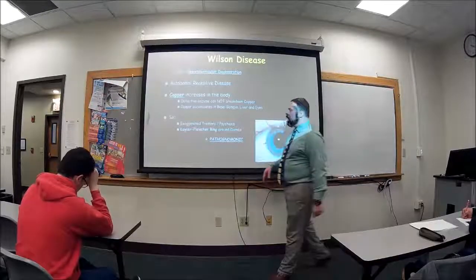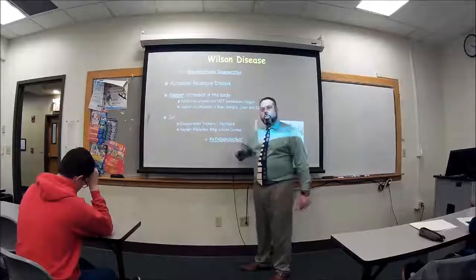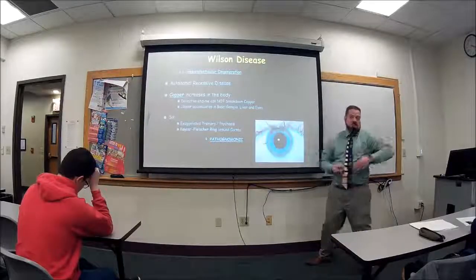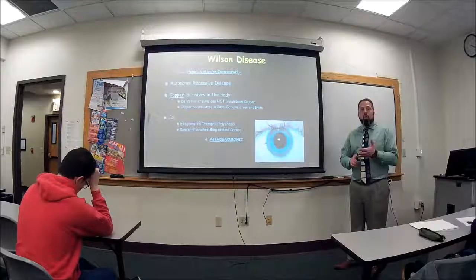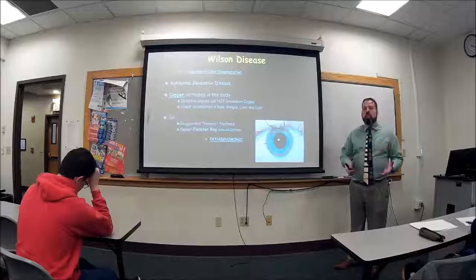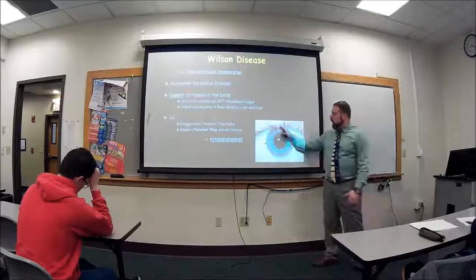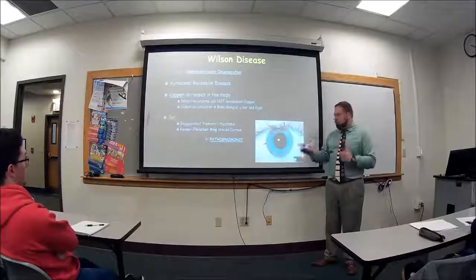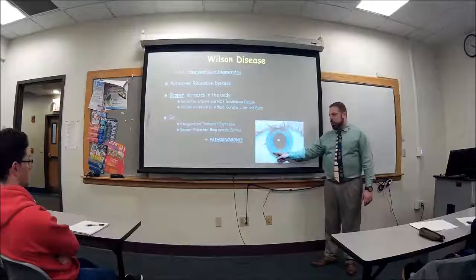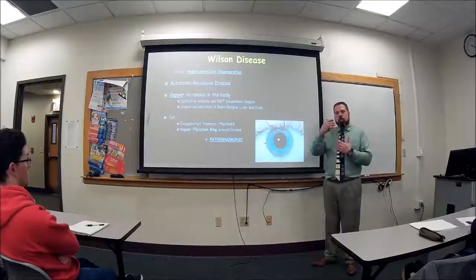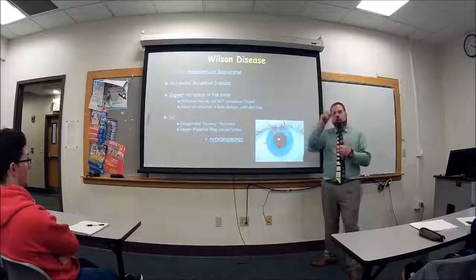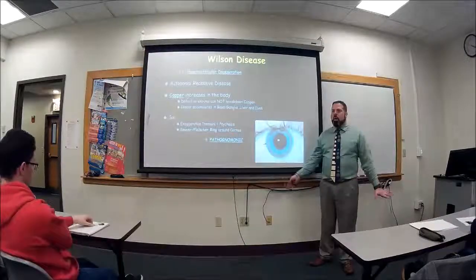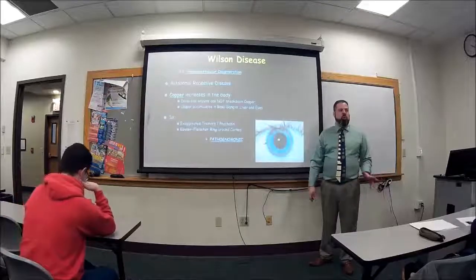If someone presents with psychosis or tremors, you might think Parkinson's or alcohol. But a simple eye test can identify Wilson's disease. You might need an ophthalmoscope to see it closely, but if you see the Kaiser-Fleischer ring, there's no question — the person has Wilson's disease.